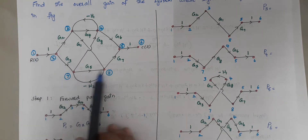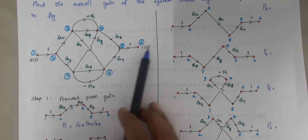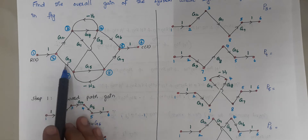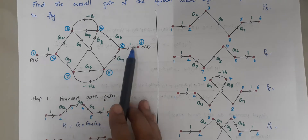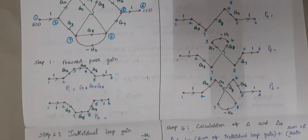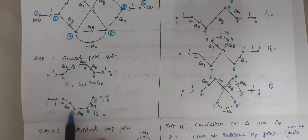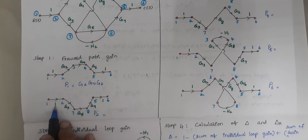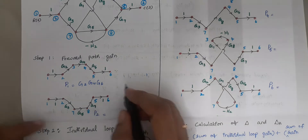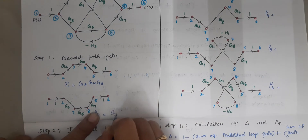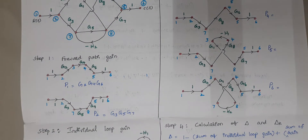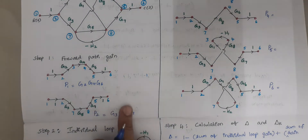The next path is 1, 2, 7, 8, 5, 6. This is also a forward path where the arrow branches always move forward. This is our second forward path. The gain of this second forward path will be 1 × G3 × G5 × G7, so P2 = G3 · G5 · G7.